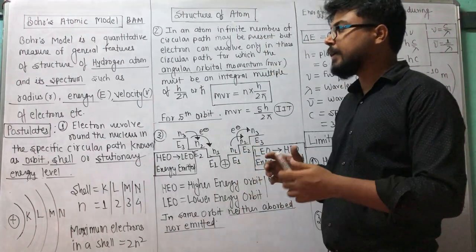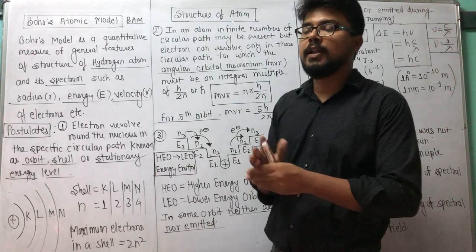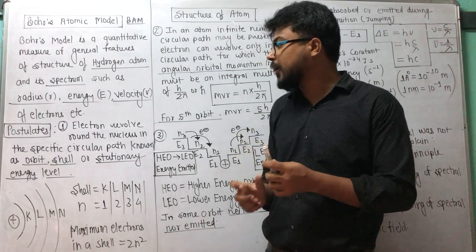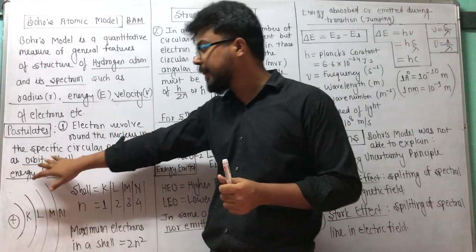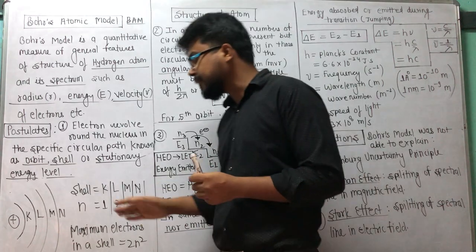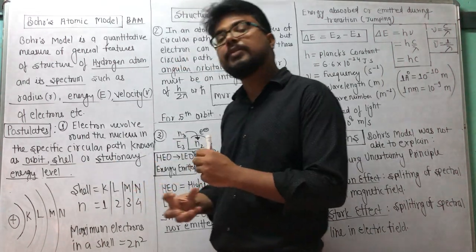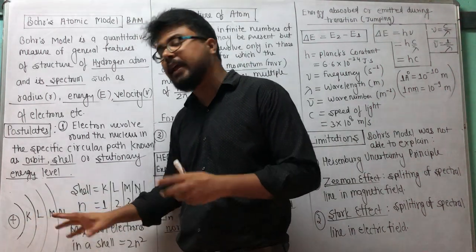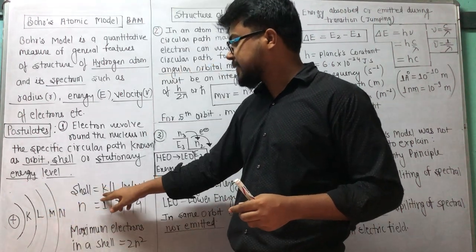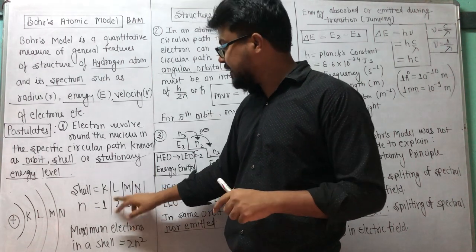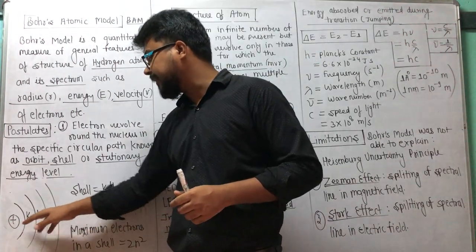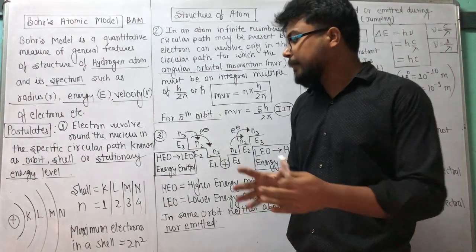Some postulates are given. Postulate number one: according to the Bohr model, electrons revolve around the nucleus in fixed or specific circular paths known as orbits, shells, main energy levels, or stationary energy levels. A name can be assigned to each circular path — K, L, M, N, O, P. Taking the first four shells: shell number one is named K shell, second shell is L shell, third shell is M shell, and fourth shell is N shell. Electrons can revolve in any of these.